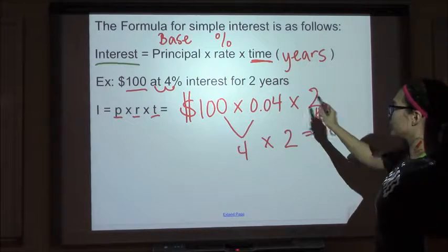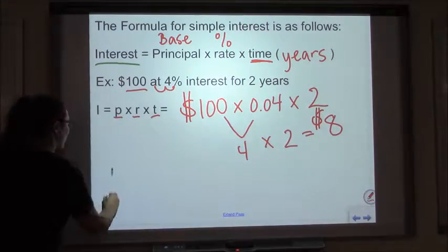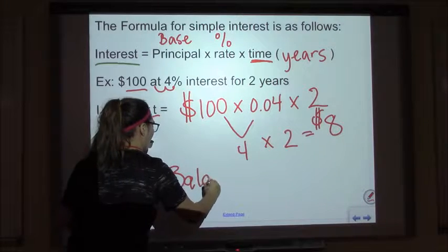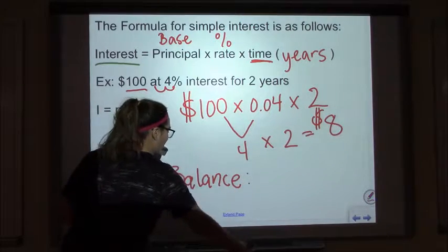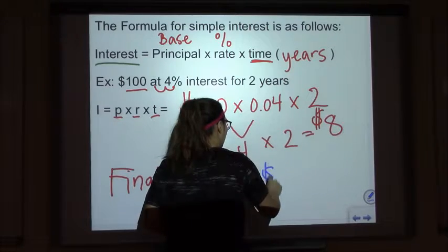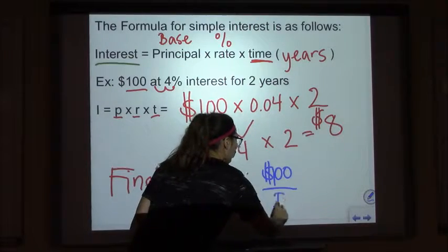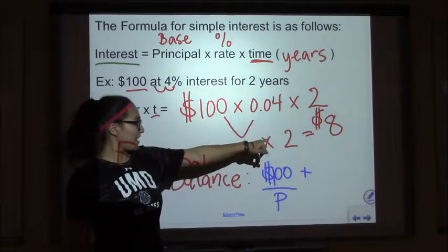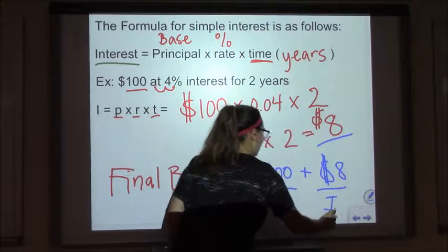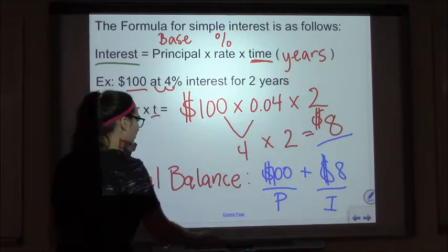Multiplying it all out: 100 × 0.04 × 2 gives us eight dollars. So we got eight dollars of interest for two years on a hundred dollars at four percent. Now if we wanted to know our total or final balance, we take our base — a hundred dollars — and add on our interest, which is eight dollars. A hundred plus eight is a hundred and eight dollars.